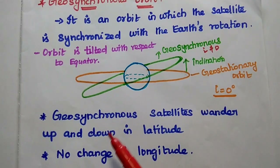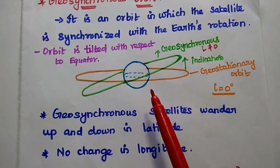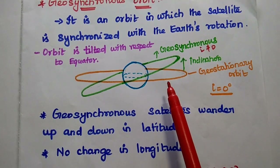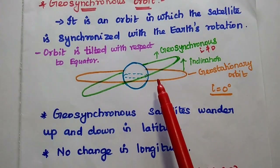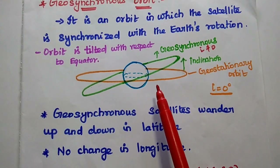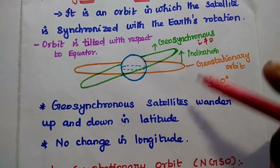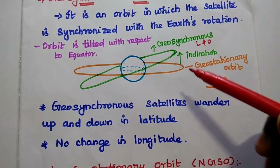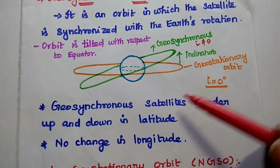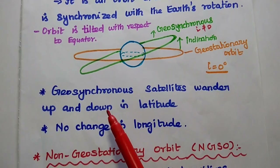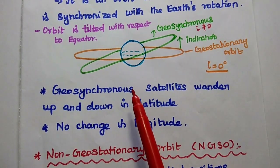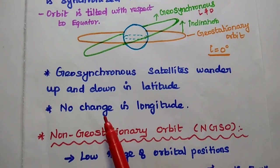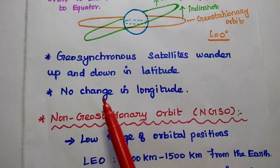Looking at the diagrammatic representation, geostationary and geosynchronous orbits differ in that geosynchronous orbits show a change in latitude but not in longitude. Geosynchronous satellites wander up and down in latitude and not in longitude.